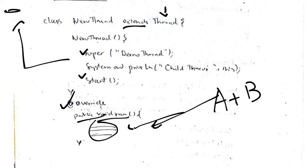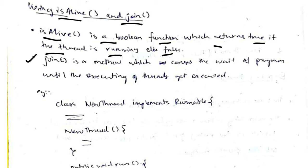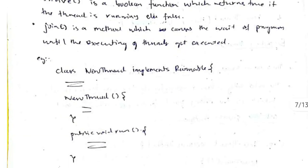Using isAlive and join, we can determine whether a thread has stopped execution or is still running. isAlive is a boolean function that returns true if the thread is running, else false. join is a function that causes the program to wait until the thread's execution is complete.